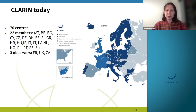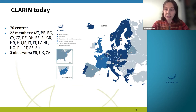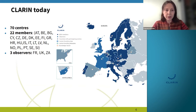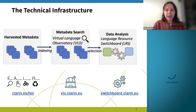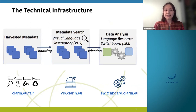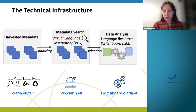This is CLARIN today. It is a distributed infrastructure of 70 data and knowledge centers distributed in over 22 member countries and three observers. At the core of the technical infrastructure of CLARIN is this network of data centers, which provide an ecosystem for FAIR language resources.